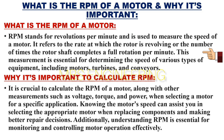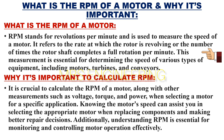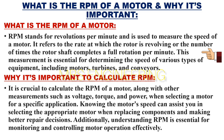RPM stands for revolutions per minute and is used to measure the speed of a motor. It refers to the rate at which the rotor is revolving, or the number of times the rotor shaft completes a full rotation per minute. This measurement is essential for determining the speed of various types of equipment, including motors, turbines, and conveyors.